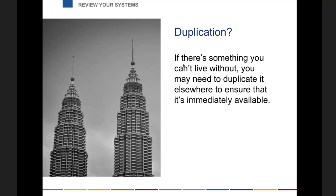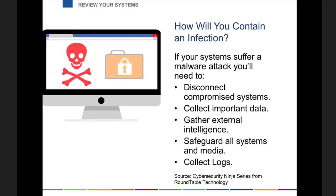This is the high availability option. If when you run through these scenarios you discover something that really can't be offline for five minutes, ten minutes, a day, or two days, then think about replicating it and making sure you have that available somewhere else. Getting into cybersecurity attacks — we'll take a little bit of time on this because it's something people talked about.